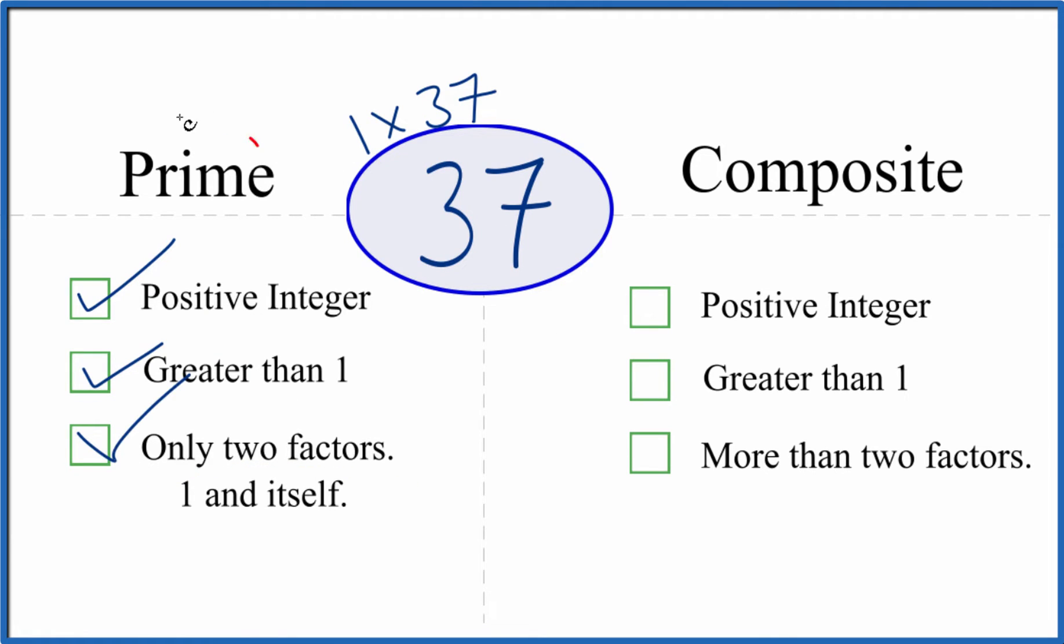So 37 is a prime number. But is it composite? It's a positive integer, it's greater than 1, but are there more than two factors? We just said there are only two factors. So 37 can't be a composite number. It's prime.